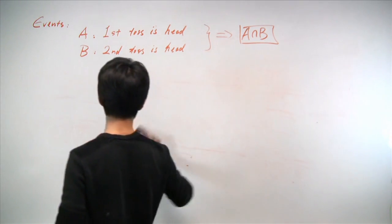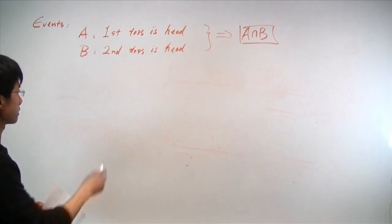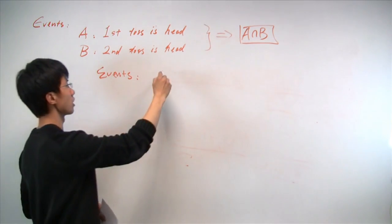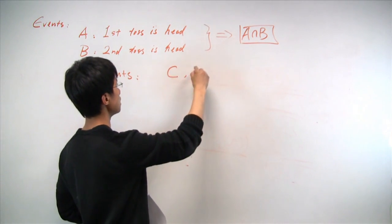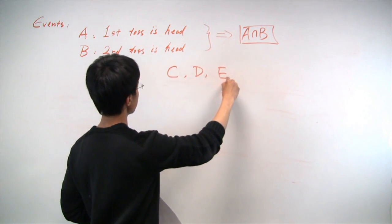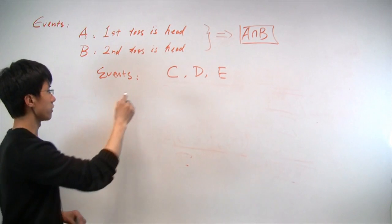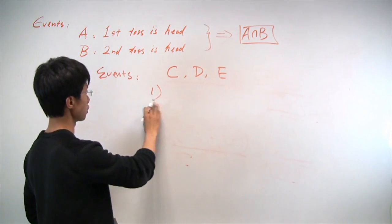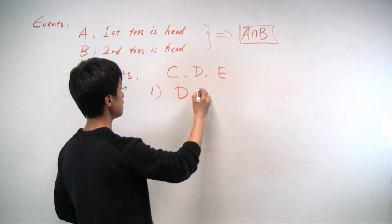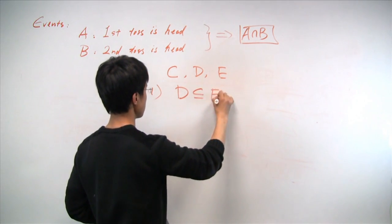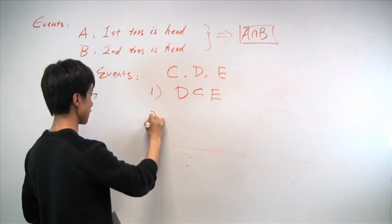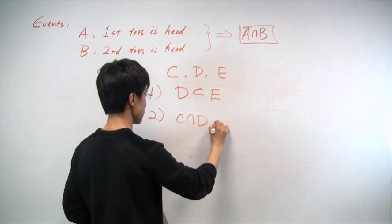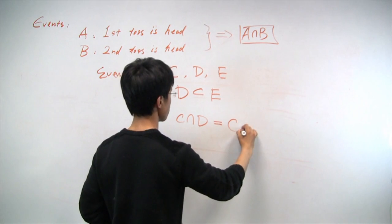And to do so, we'll be defining three events, somewhat more abstractly. Let's say we have three events, C, D, and E. Imagine any event, but all three events have to satisfy the following condition. First, event D will be a subset of E. And second, the intersection of C and D is equal to the intersection of C and E.